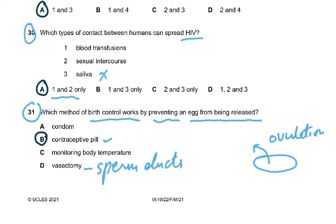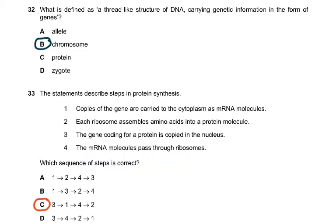The question asks which method prevents ovulation specifically. We would give the woman hormones via contraceptive pills containing estrogen and progesterone. These suppress FSH and LH release, so there is no ovulation and no ovum is formed, resulting in no pregnancy. That was question 31.